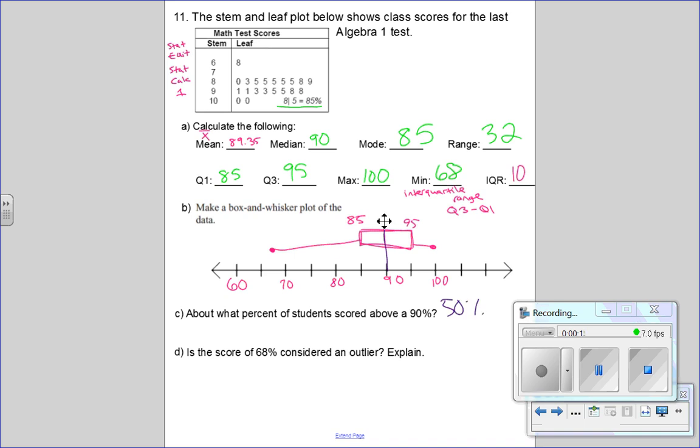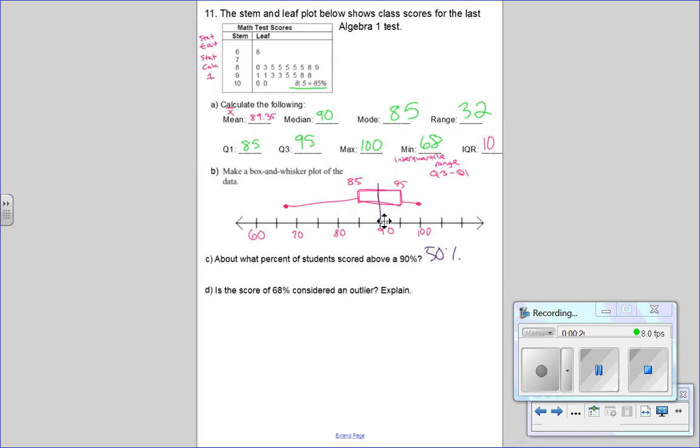And then, is the score of 68 an outlier? You can't just say yes, it looks like it's below. You're going to do the mathematical way of doing this. So, you take your interquartile range of 10, you multiply it by 1.5, which is 15.